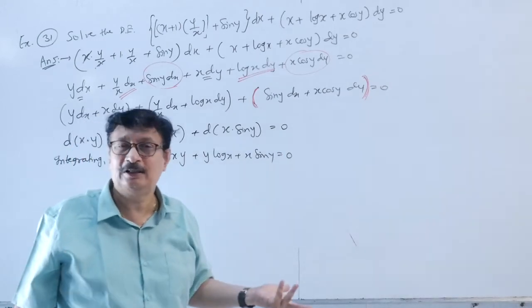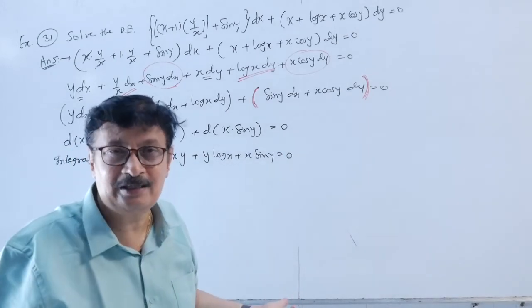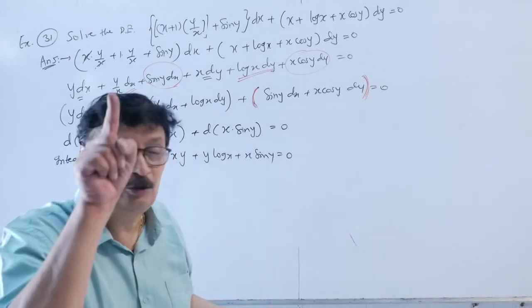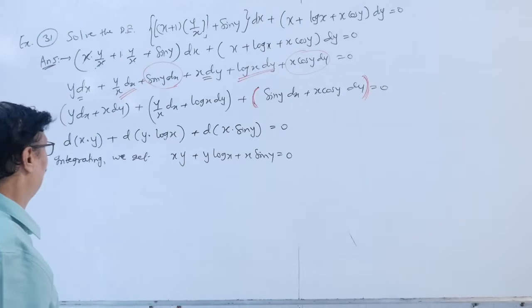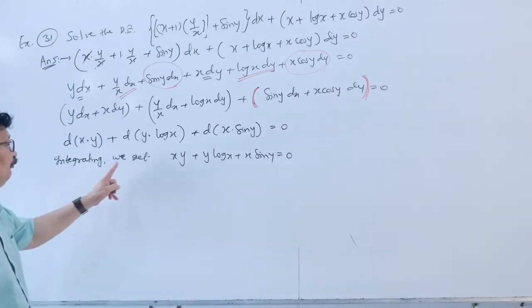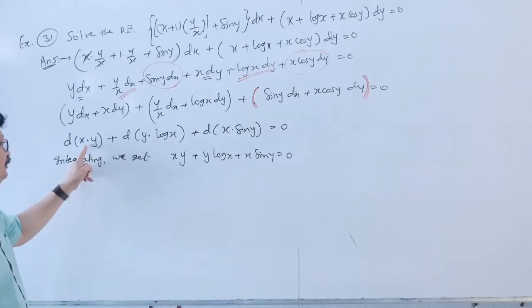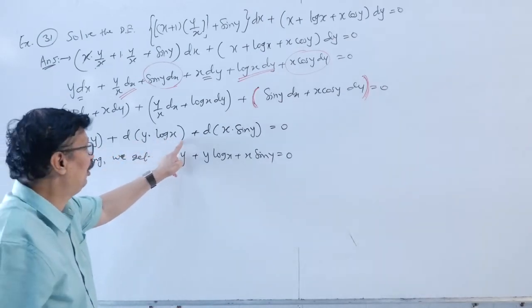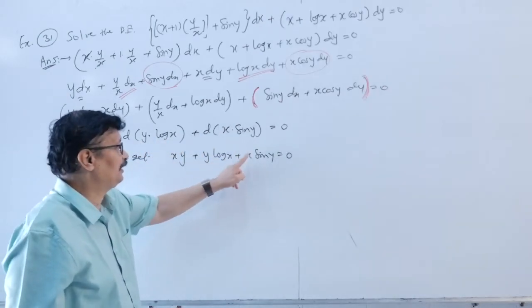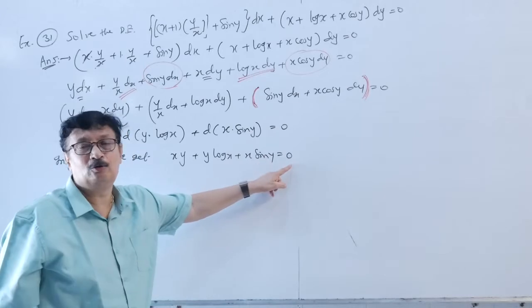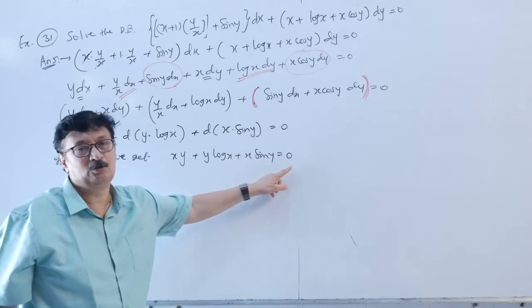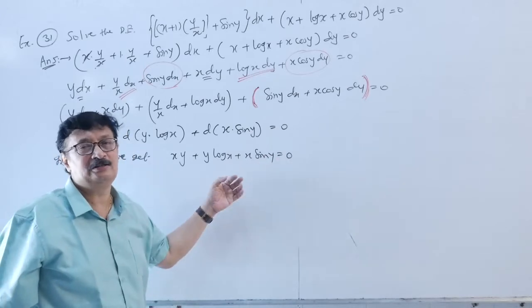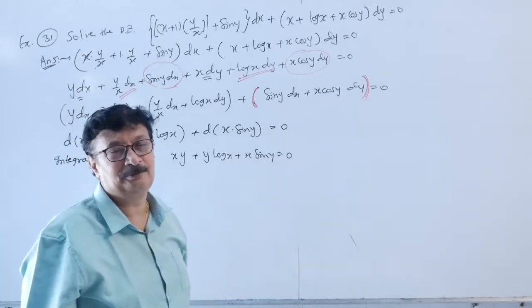Integrating: the derivative and integration cancel, giving x·y + y·log(x) + x·sin(y) = 0 as the required solution.